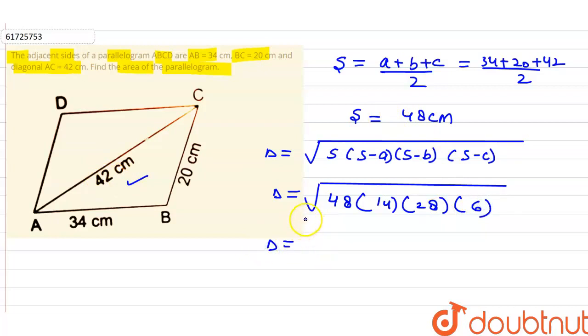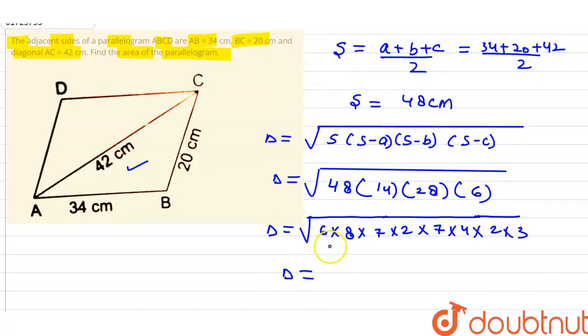So we have delta which is square root of, now 48 is 6 into 8, 14 is 7 into 2, 28 is 7 into 4, and 6 is 2 into 3. How much is this delta? We have 7 and 7, so one 7 will come out. Next we have 8 which is 2 into 2 into 2, so two 2s come out and one 2 remains. With 4, that's 2 into 2, so another 4 comes out.